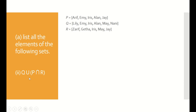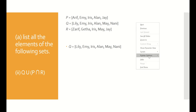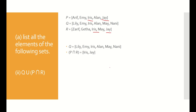For the second question, we need to find Q union (P intersect R). As usual, we solve from left to right: list the elements of set Q first. Then for P intersect R, find the common elements between set P and set R — these are Iris and J. The full answer for Q union (P intersect R) includes all elements in set Q and in P intersect R combined.